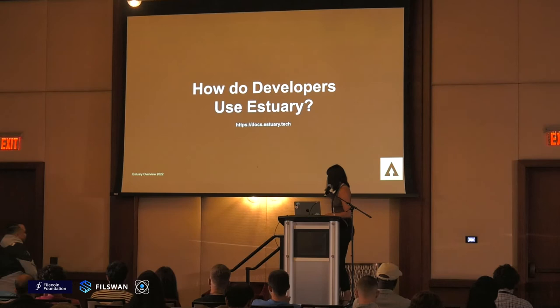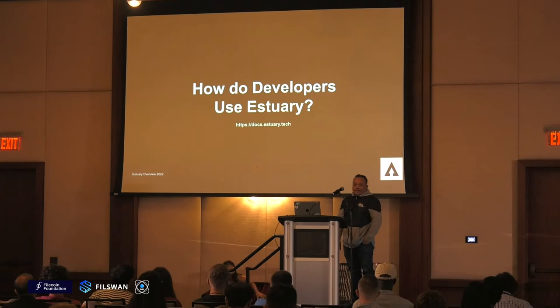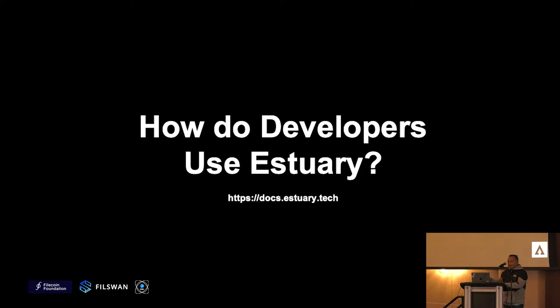Now Alvin is going to talk about how developers are able to use Estuary. Hi everyone, my name is Alvin, I'm a software engineer primarily working on Estuary. Whenever you upload a file using Estuary, it replicates the data six times across a Filecoin network. Estuary facilitates and manages all of these replications and puts them on a Filecoin network, which is very powerful when building a mission-critical, data-centric application — especially because it's replicable and verifiable using content addressable storage.